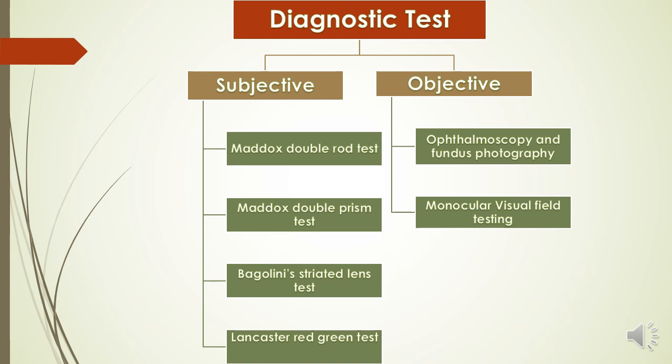Coming to the diagnostic tests, these can be either subjective or objective. In a subjective test the patient provides feedback, whereas in an objective test the examiner observes. Subjective tests include the double Maddox rod test, double prism and Maddox rod test, Bagolini's striated lens test, and Lancaster's red-green test. Objective tests include ophthalmoscopy — where a retinal tilt can be seen — fundus photography, and monocular visual field testing.